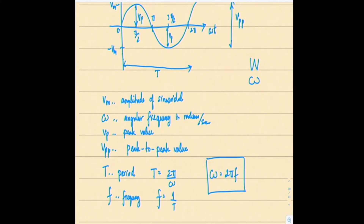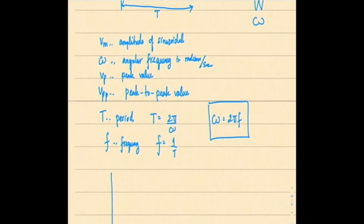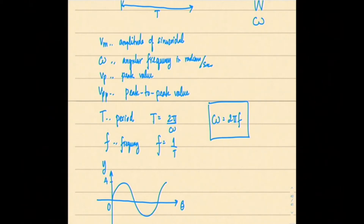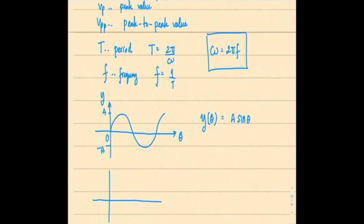That's all the parameters. Another thing I want to review is the shifting of the waveform. Let's say you have a function y with respect to θ — a sine wave with amplitude A. This is y as a function of θ equal to simply A sin θ, starting from 0. If the starting point shifts and the wave is shifted to the right...